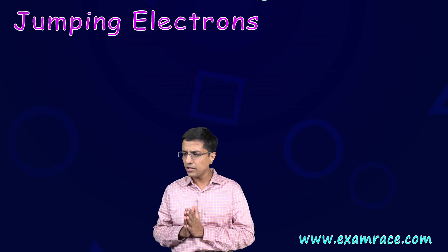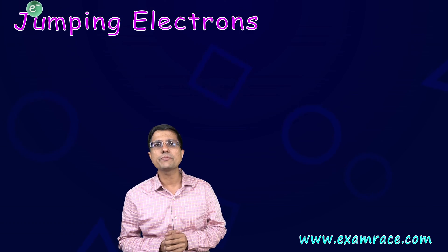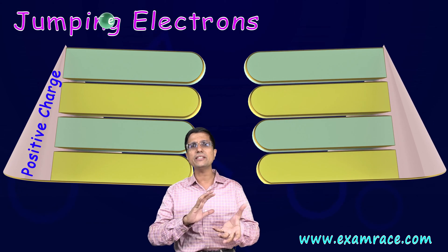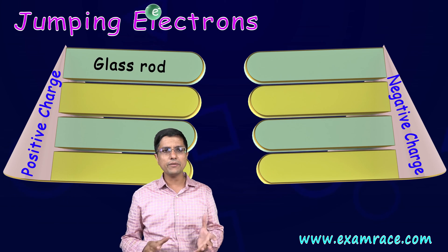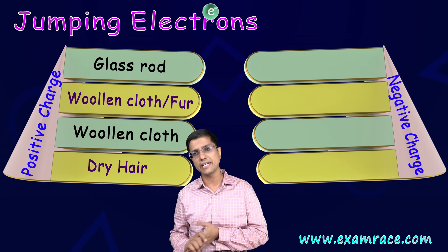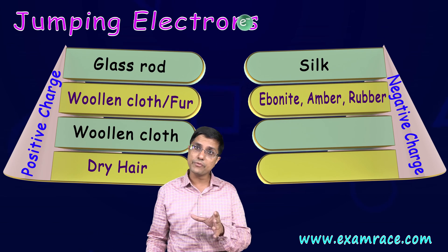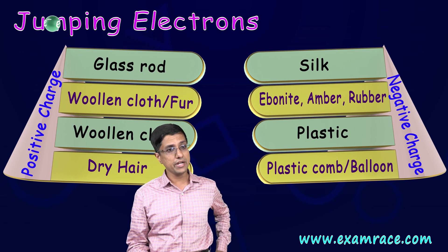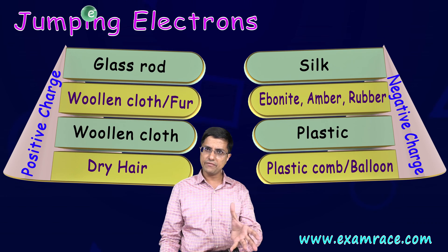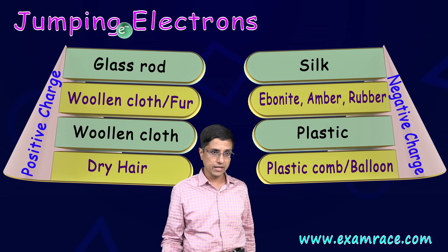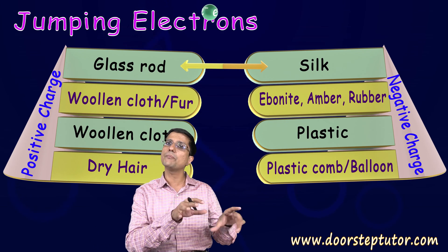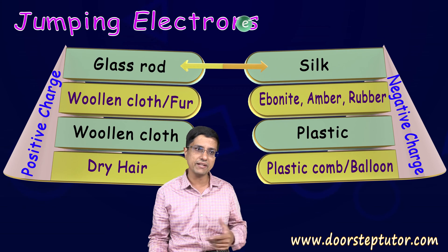Now you might have seen, or your teacher might have done this experiment for you at your school. The idea is when we rub certain things together, there's always one thing which gets positively charged and the other thing which gets negatively charged. These things you have to remember, unfortunately. At least a few of those you have to remember because they can be asked in your exam. So here are a few things that I have listed which I found important. Glass rod and silk, if you rub them together, glass rod would become positively charged, the silk will become negatively charged.